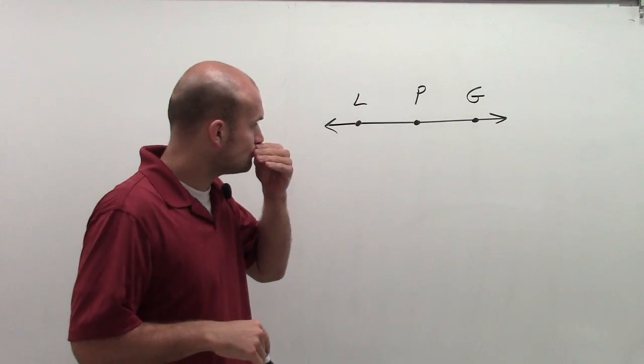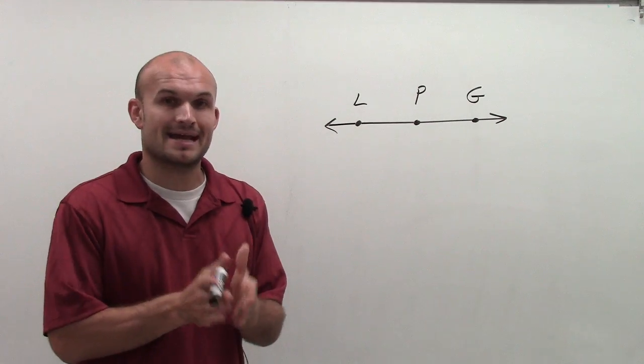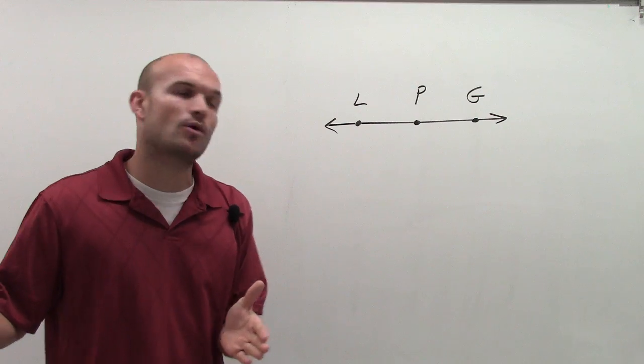So my two rays are going to go through, remember, a ray also has an endpoint, but then it goes through another point.